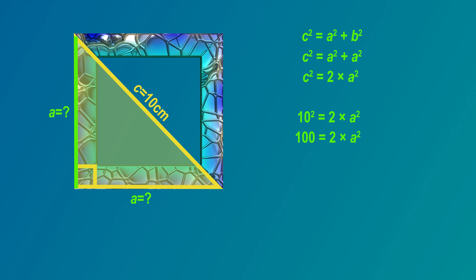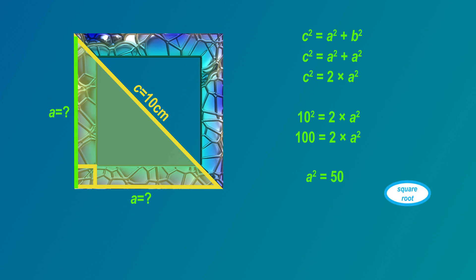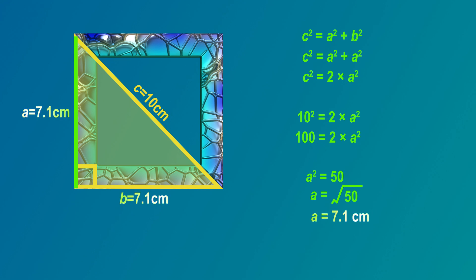Working in reverse, if we divide both sides of the equation by 2, then A squared equals 50. The reverse of squaring is to square root. So A is the square root of 50. So A is 7.1 centimeters. The length of the side of this square is 7.1 centimeters.